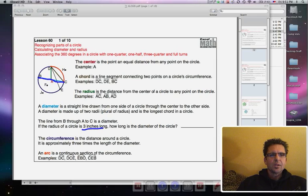If the radius of a circle is three inches long, how long is the diameter? Well, the radius is from the center of the circle to the edge of the circle. So that means that's three inches, which means that this other piece right here is three inches. And three plus three would make six inches for the diameter.